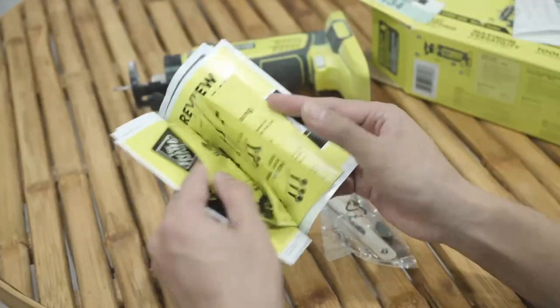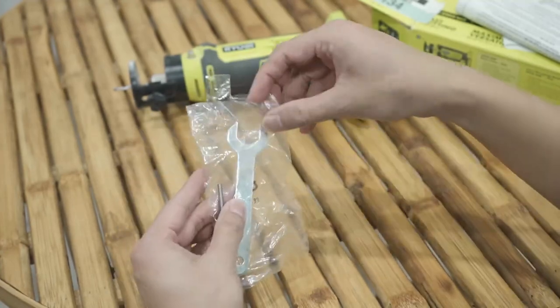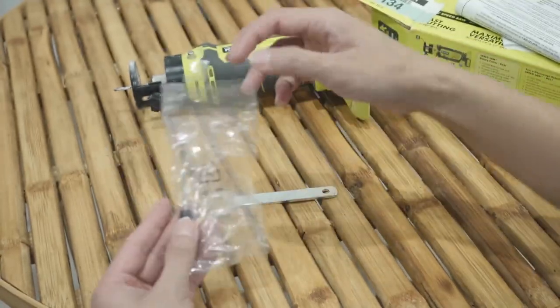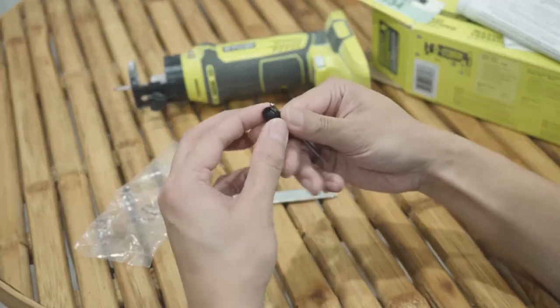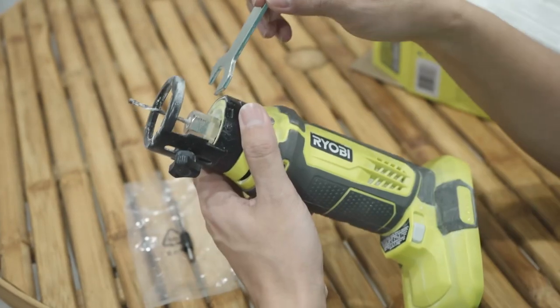In the Ryobi box it also came with the instruction catalog with more products, and some of these tools right here. These are pretty important, they are like backup drill bits with this tool, and we have these two that came in together.